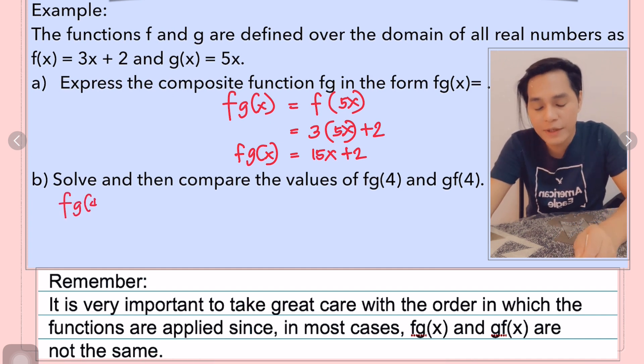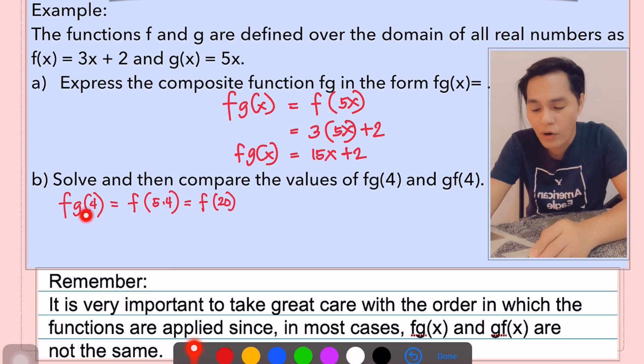Okay, so here we go. So first, f of g of 4. Now, f of g of 4 is equal to, I'm just copying f and then apply g to 4, meaning we are going to substitute 4 to the function of g which is 5x. So that's why you have here 5 times 4 which is equal to 20.